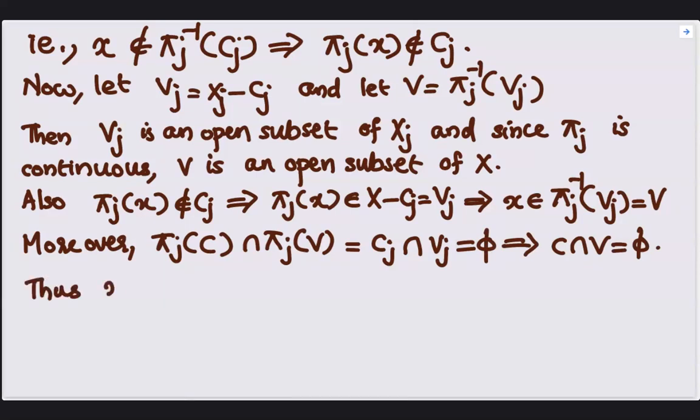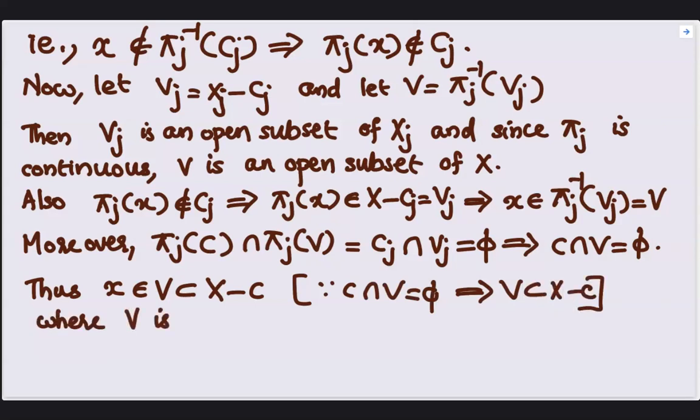Thus, we have x element of V, and V is contained in X minus C since C intersection V is equal to phi. We will have V subset of X minus C, and here V is an open subset of X.